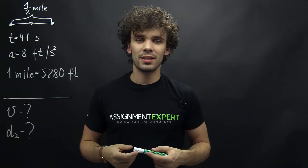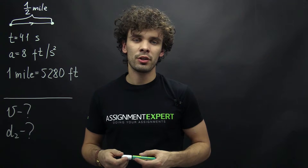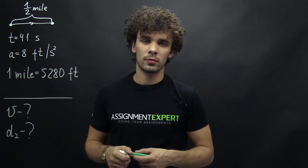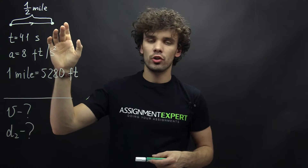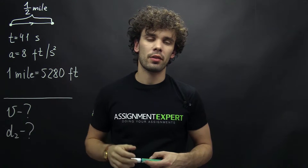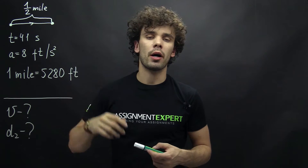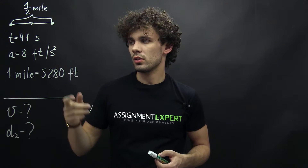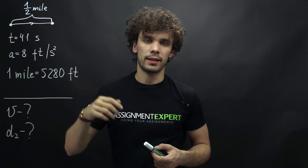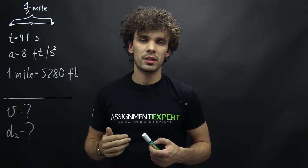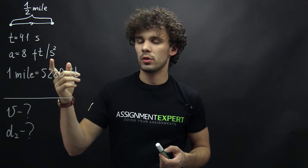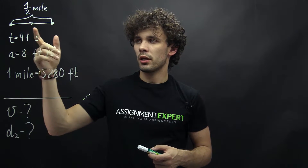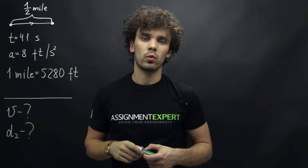Hi guys! This is Assignment Expert and today we prepared the following task for you. The train moves from one station to the other and the distance between them is half a mile. The minimum time needed to travel this distance is 41 seconds, and the train moves with acceleration and deceleration of 8 feet per second squared. It starts at rest and finishes with a full stop.